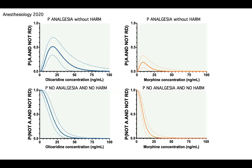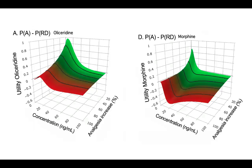We can do more with this utility function. So far I showed you that we calculated the likelihood of harm or benefit versus harm. You can also find the ratio of analgesia probability to harm probability. The utility function is context-sensitive, because you need to define what you call analgesia and what you call respiratory depression: how much decline in ventilation do you call respiratory depression? You can define the thresholds.